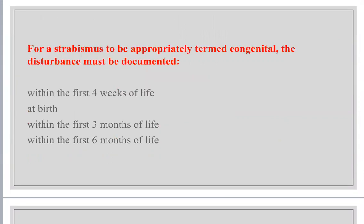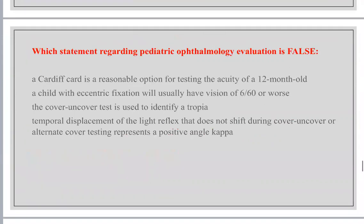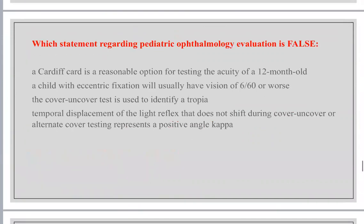For strabismus to be appropriately termed congenital, it must be present within the first six months of life. Regarding pediatric ophthalmology evaluation: Cardiff cards are reasonable for testing acuity of a one-year-old. A child with eccentric fixation that is clinically evident will usually have vision of 6/60 or worse.